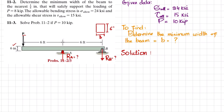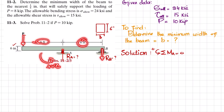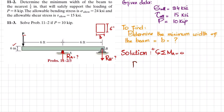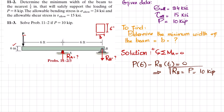We will find Ra and Rb using equations of equilibrium. The first equation is that the sum of all moments about point A equals zero, taking counterclockwise as positive. About point A, P times its perpendicular distance of 6 feet is counterclockwise (positive), and Rb times 6 feet is clockwise (negative). So P×6 − Rb×6 = 0, giving Rb = P = 10 kips.